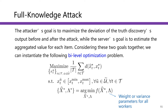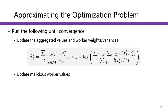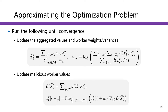Bi-level optimization is challenging. We propose a two-step iterative method to solve the bi-level optimization problem. The first step is to update the aggregated values and workers' weights or variance. In this step, the attacker fixes the malicious workers' values, then solves the lower-level optimization problem to get the aggregated values. For example, for the CRH model, we iteratively update these two steps to get the aggregated values. Once we get the aggregated values, we use the standard gradient descent method to update the malicious workers' values. These two steps are repeated until convergence.